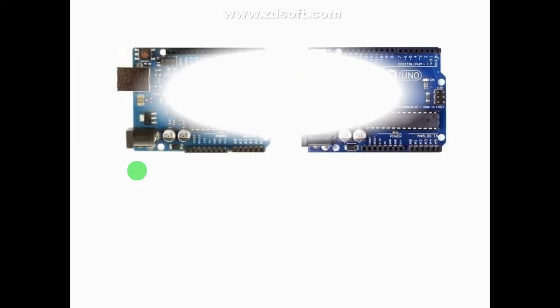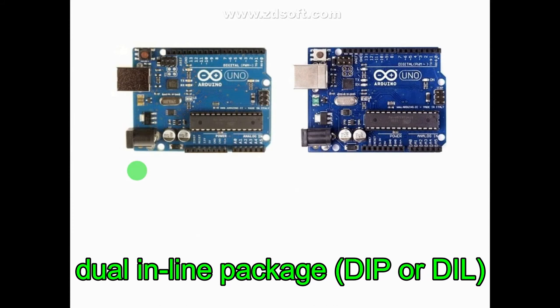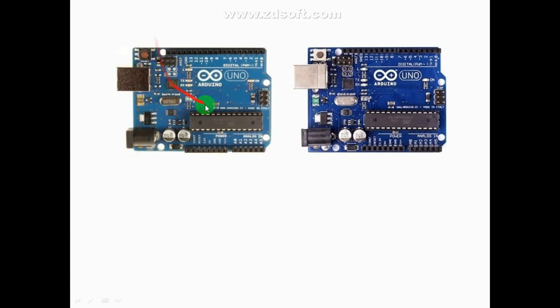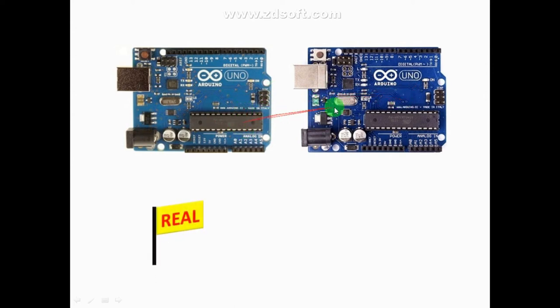Now let's talk about Arduino Uno's DIP package. DIP means Dual Inline Package. This package has pins on two sides. Here we focus on the board's color: one is light blue and one is dark blue. The light blue is the real board and the dark blue is the clone.